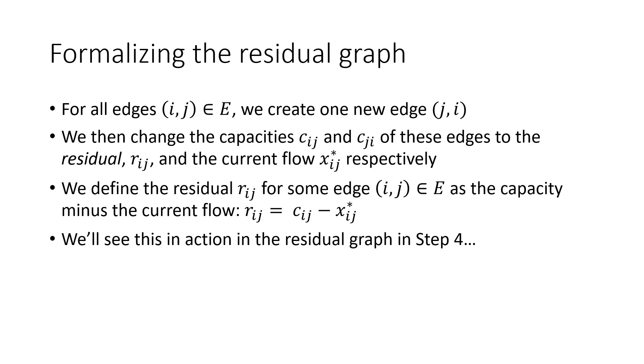In our formal definition of the residual graph, we create new backwards edges for each edge and set the capacities on the new edges and change the capacities on the old ones. We define this R_ij as the residual of the edge from node i to node j, which is just the amount of flow that we can still send through the edge. This R_ij will be the capacity of the forward edge, and the amount that we can send backwards will just be the current flow. It should become clearer when we create the residual graph for our current graph.